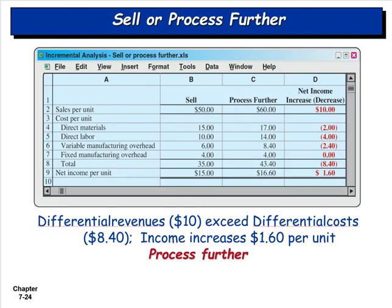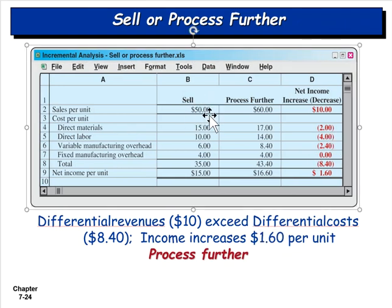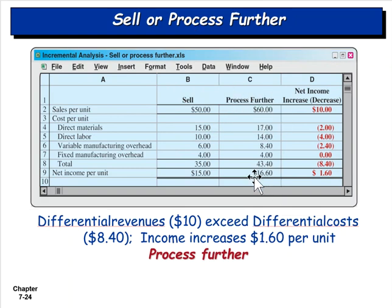We should process further because we add $1.60 per unit in income. Selling unfinished, we make $15 per unit; processing further, we make $16.60 per unit — an additional $1.60 per unit. That assumes, of course, that we can actually sell the finished items.